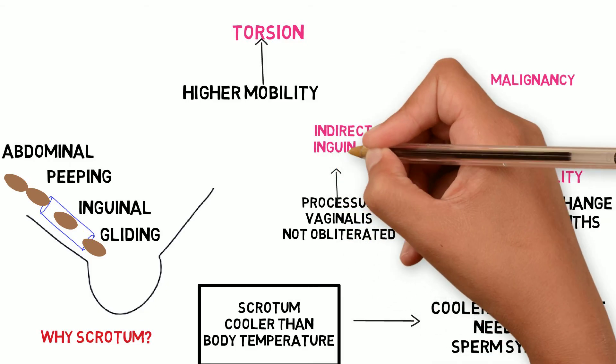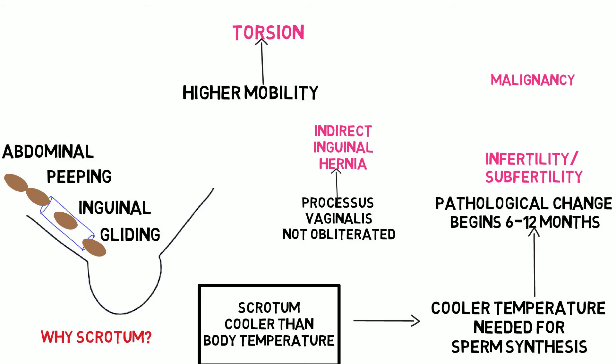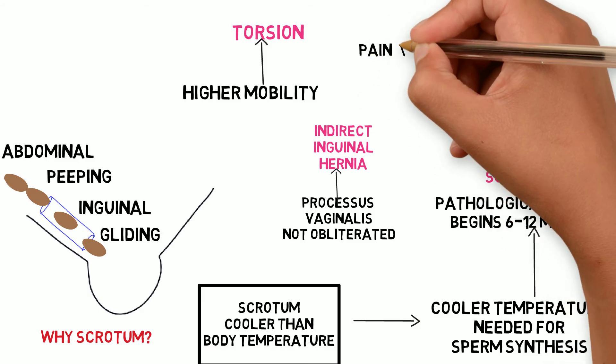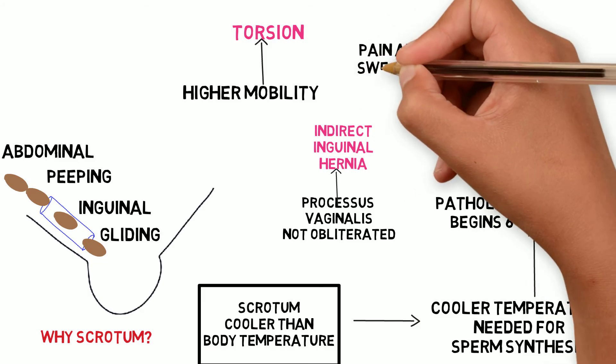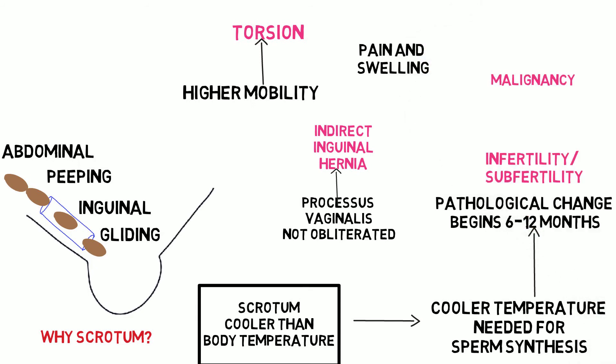Indirect inguinal hernia can occur. Whenever there is pain and swelling in a child with undescended testis, torsion and indirect inguinal hernia are to be considered.